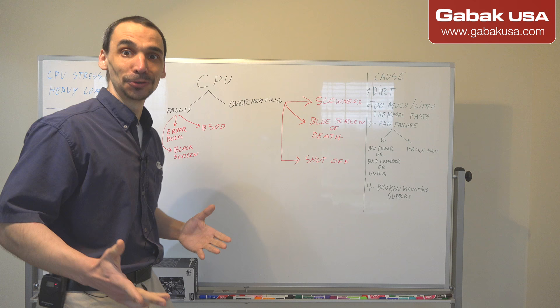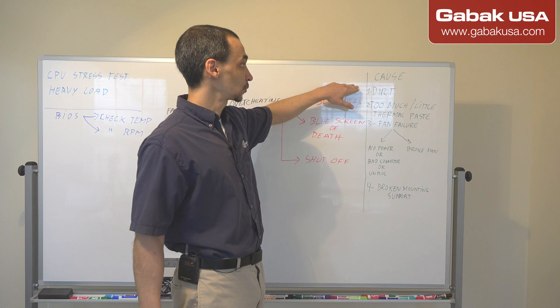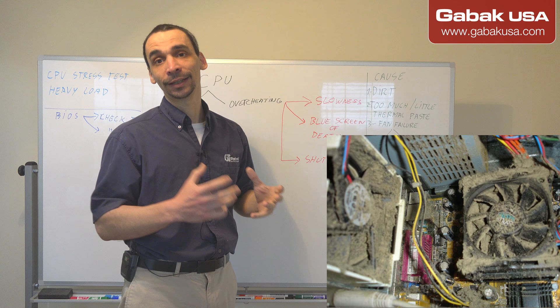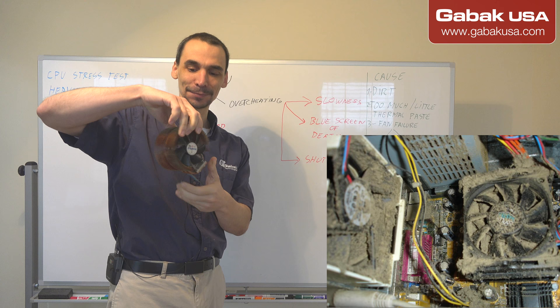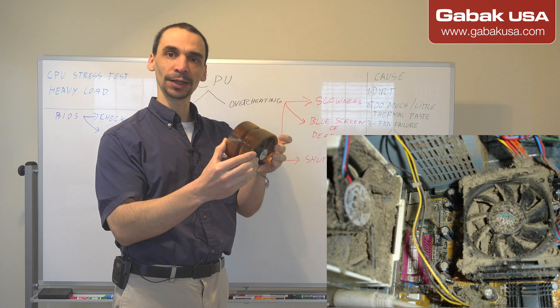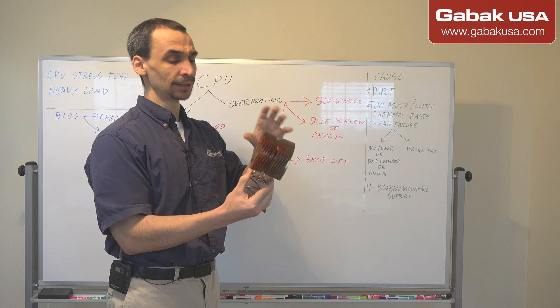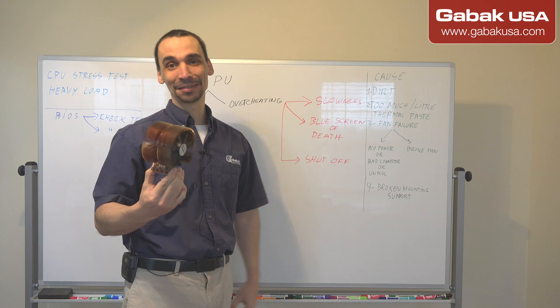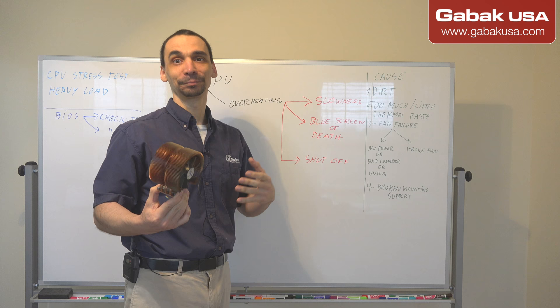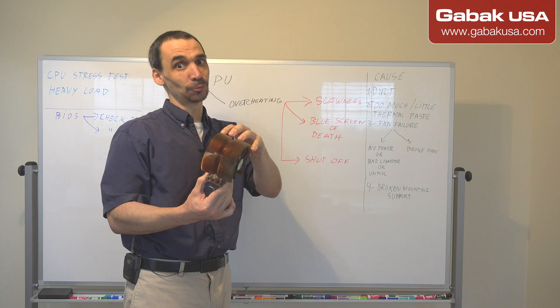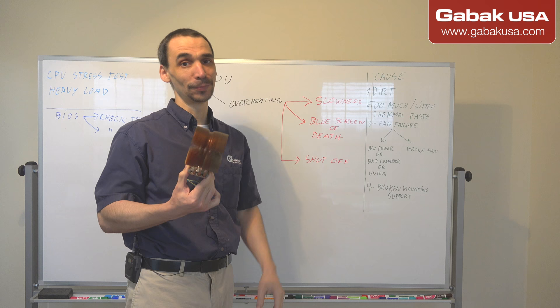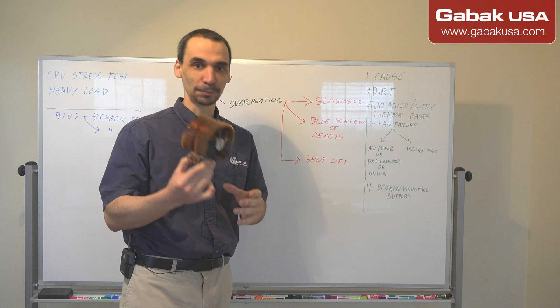Now I'm going to tell you the causes. The first cause will be dirt. If you have a lot of dirt on the heat sink, that will be the main issue. Here I have one from an old computer — this is kind of pretty clean, but usually when you open up the computer and have the heat sink inside, sometimes at the customer's, they have cats, dogs, and everything else. If the computer didn't have any maintenance for a very long time you will see that it's all filthy, and of course the heat will not dissipate if it's all clogged up by dirt. It will be very difficult for the computer to dissipate all the temperature.